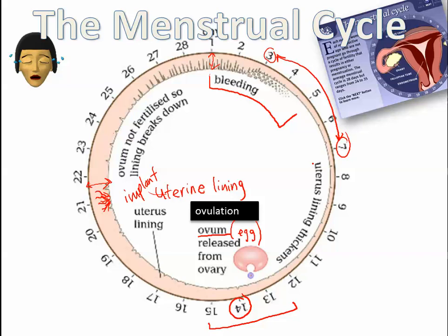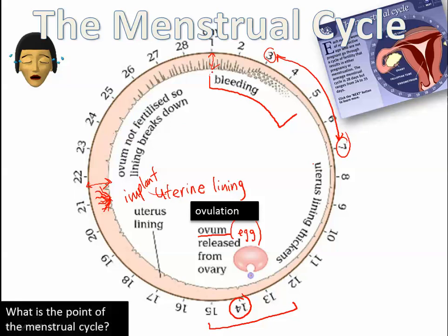Of course, if the egg becomes fertilized and actually implants, the wall is not going to break down — it's going to stay up. So if a woman becomes pregnant, one of the first signs is that she misses her period and the menstrual cycle stops. A lot of other things happen there, but basically the wall is going to stay thick. Those are the basics of the menstrual cycle.